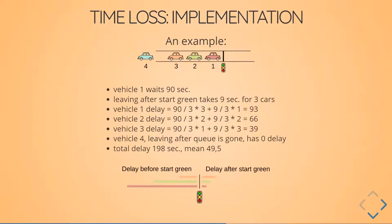Here's a small example: four cars, three are lining up. The first vehicle waited 90 seconds — we can conclude that from the data. Leaving after start green takes 9 seconds for three cars. The calculation is: vehicle one waits 90 divided by 3 times 3 before start green, plus 9 divided by 3 times 1 after start green, giving 93 seconds total delay. Vehicle three, for example, gets 90 divided by 3 times 1 before green, and 9 divided by 3 times 3 after green. The fourth vehicle has no delay. Total delay for this example comes to almost 200 seconds.